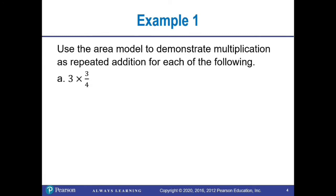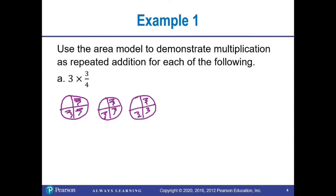In part A, we have three times three-fourths. That means I'm going to draw a circle and shade three-fourths of that circle, then repeat this three times. Here's my first circle with three-fourths shaded, my second circle with three-fourths shaded, and my last circle with three-fourths shaded. So I have three-fourths plus three-fourths plus three-fourths. The denominators are the same, so I add the numerators. Three plus three plus three is nine, and bringing across that denominator, we have nine-fourths.